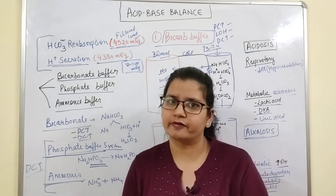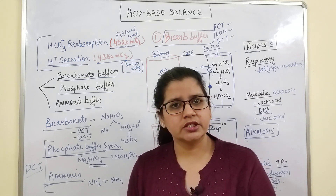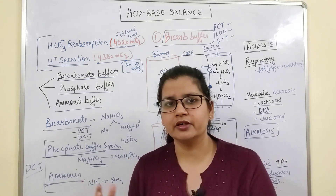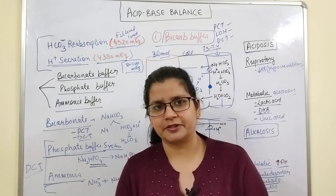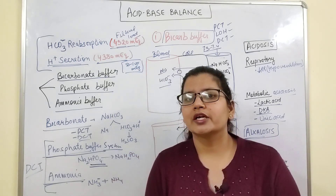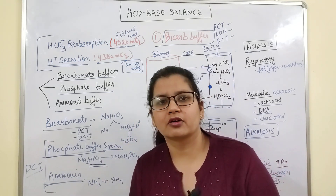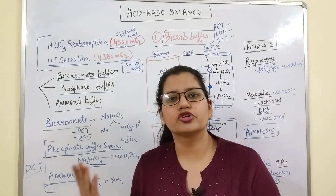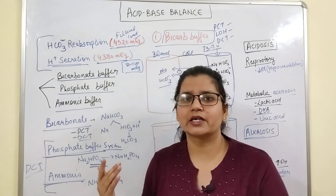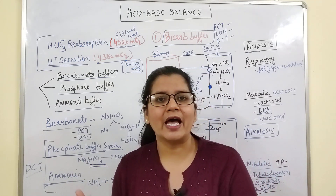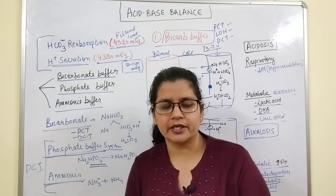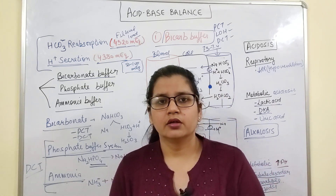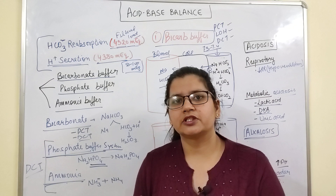Apart from blood, there is the respiratory buffer system, which is the regulation of CO2 level in our body by changing the ventilation rate. Increase in CO2 causes hyperventilation, which leads to CO2 washout and hence carbonic acid washout — so acid washout. This is also a buffer system in our body.